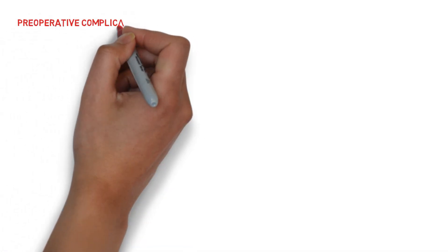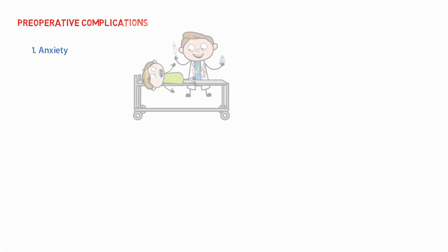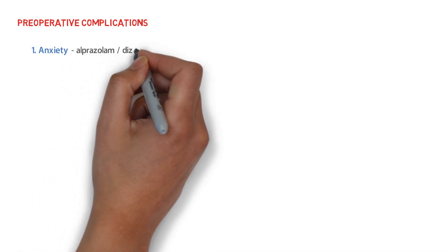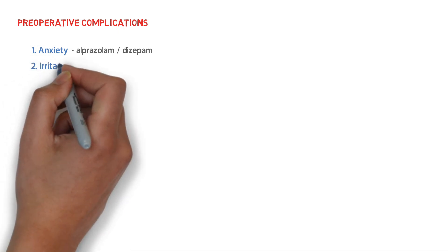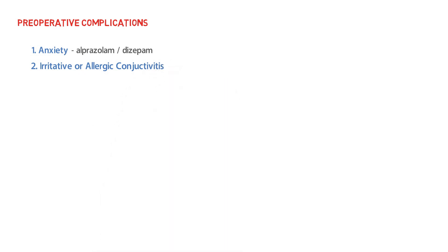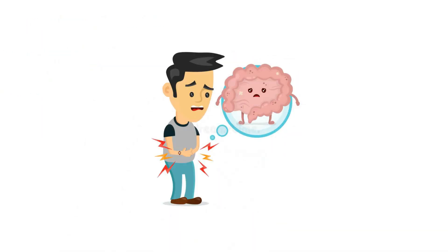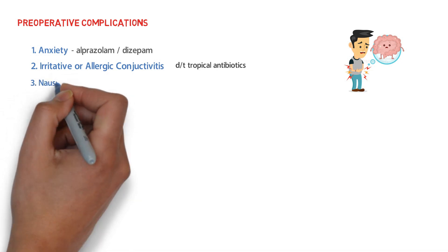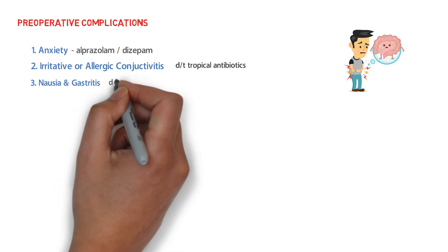The first preoperative complication is anxiety, which occurs due to fear and apprehension of the operation. We can use drugs like alprazolam or diazepam to alleviate such symptoms. The second is irritative or allergic conjunctivitis, which may occur due to preoperative topical antibiotic drops. The third is nausea and gastritis, which is due to preoperative medicines such as acetazolamide.